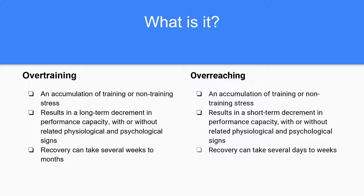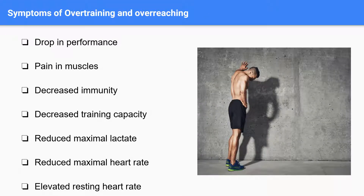The symptoms of overtraining and overreaching are the same and are things such as a drop in athlete's performance, pain and soreness in the muscles used, decreased immunity, decreased training capacity, reduced maximal lactate from a lack of glucose breakdown, and finally reduced maximal heart rate during exercise and an elevated resting heart rate.